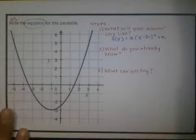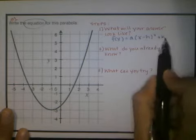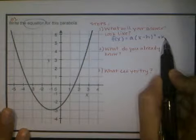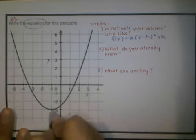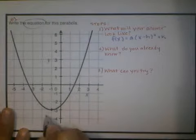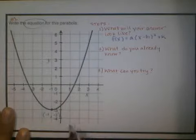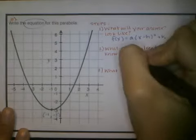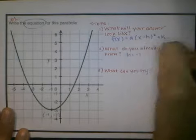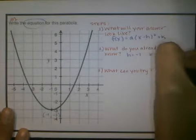The first thing that I know about a parabola is that h and k represent the vertex, and I can see the vertex of this equation right here. It's at the point (-1, -3). So that means I already know that h is -1 and k is -3.